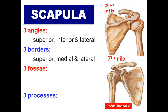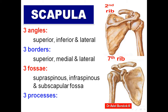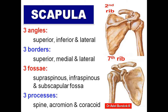Three borders: the superior border is the shortest; the medial border is called the vertebral border; the lateral border is called the axillary border. The upper border has a notch called the suprascapular notch. Three fossae: one above the spine — supraspinous fossa; one below the spine — infraspinous fossa; and the subscapular fossa. Three processes: spine, acromion, and coracoid process. The posterior border of the spine is called the crest, and the medial end of the crest of the spine lies opposite T3 vertebral spine.